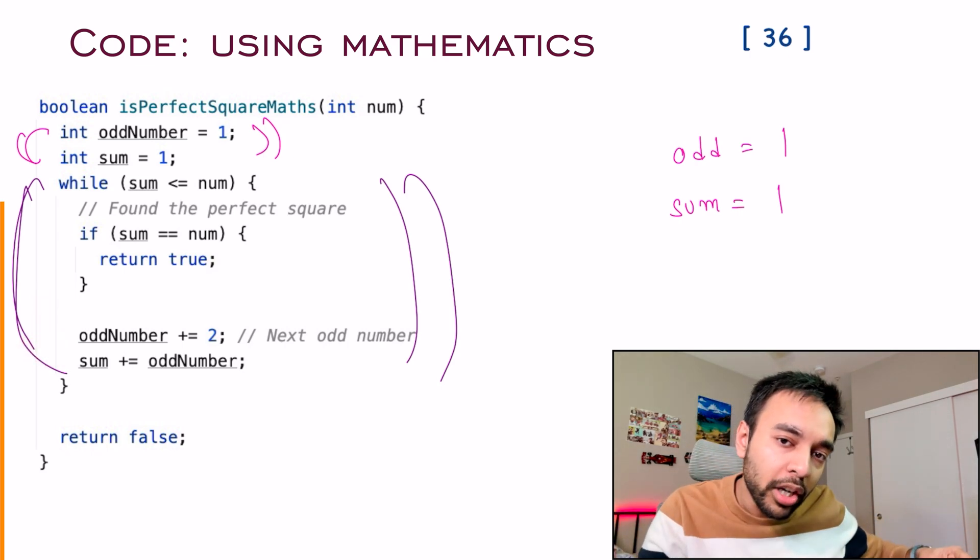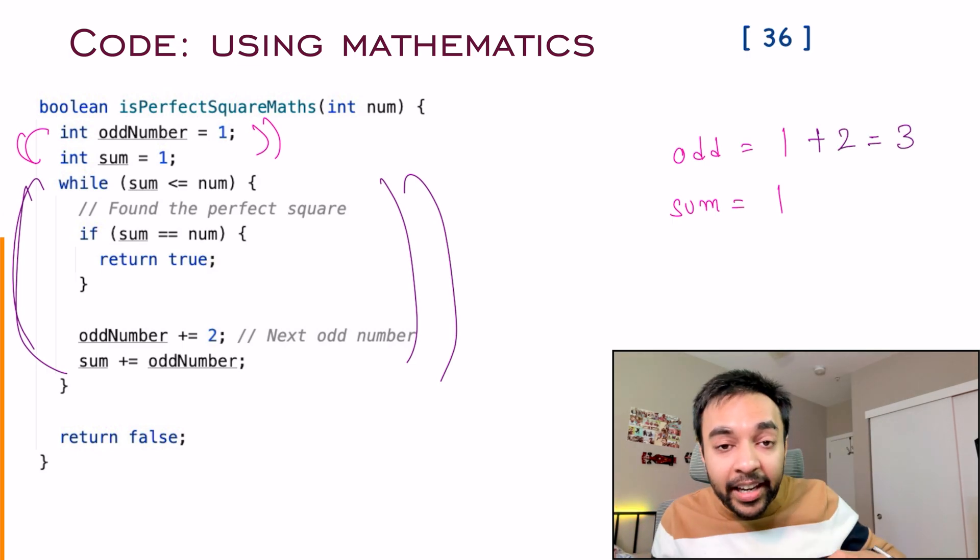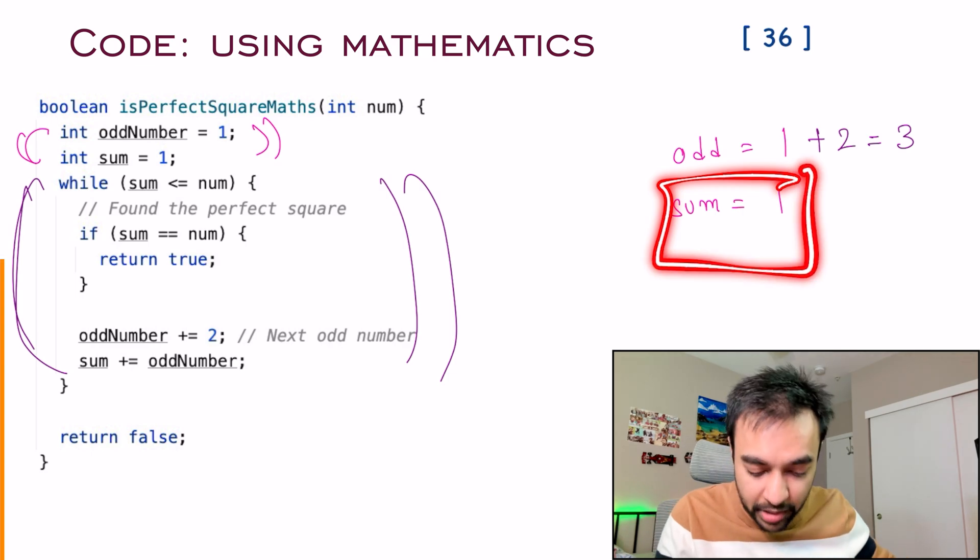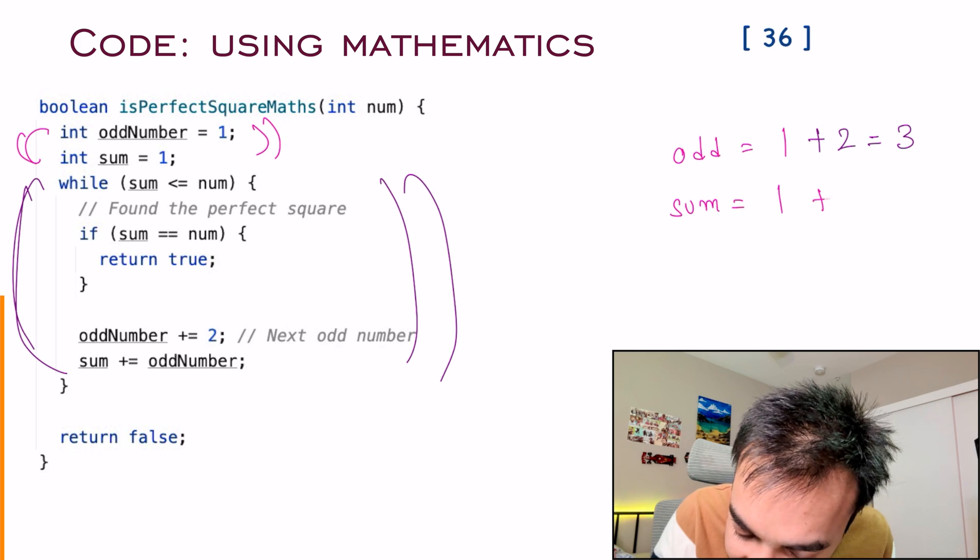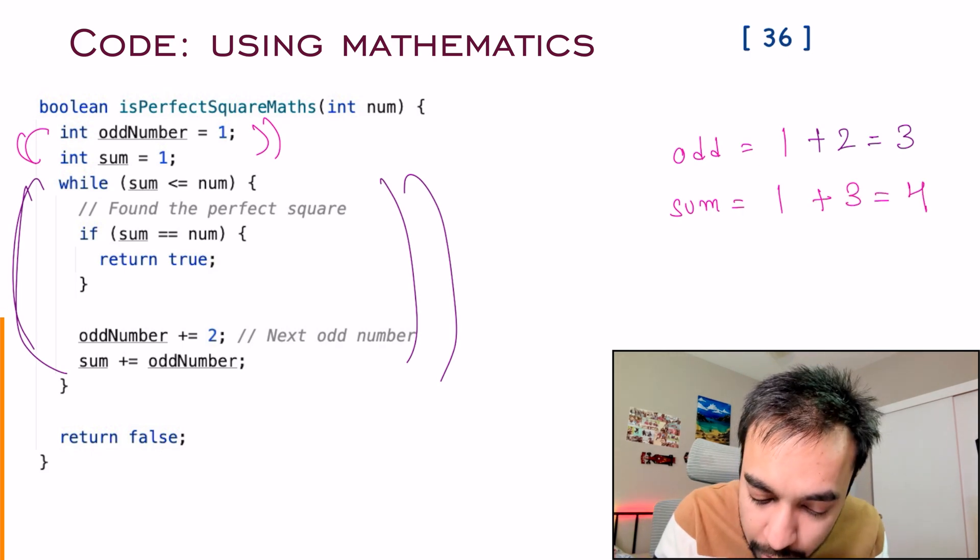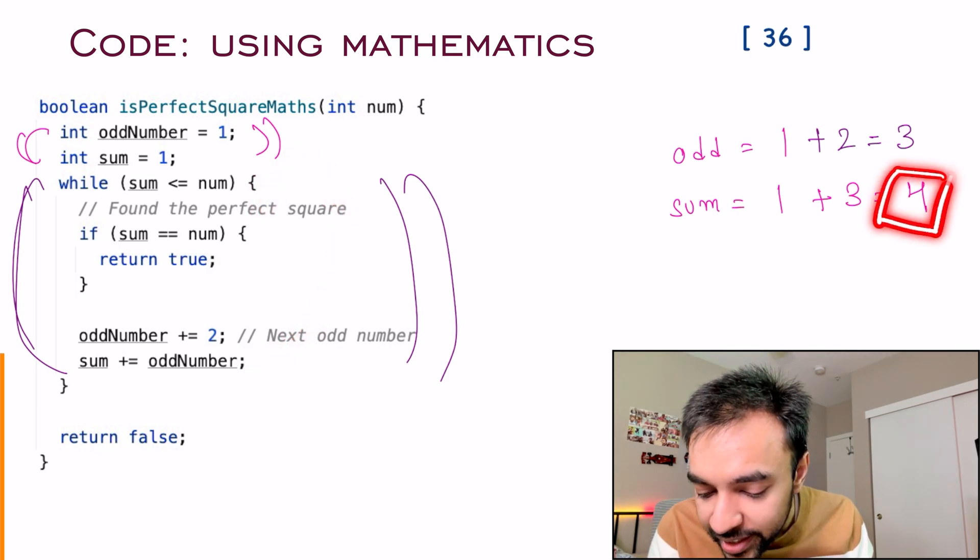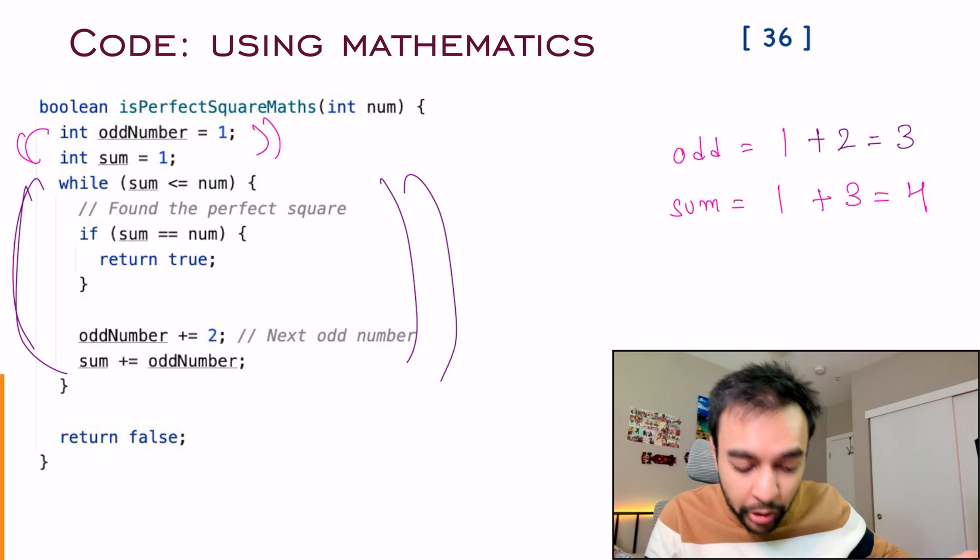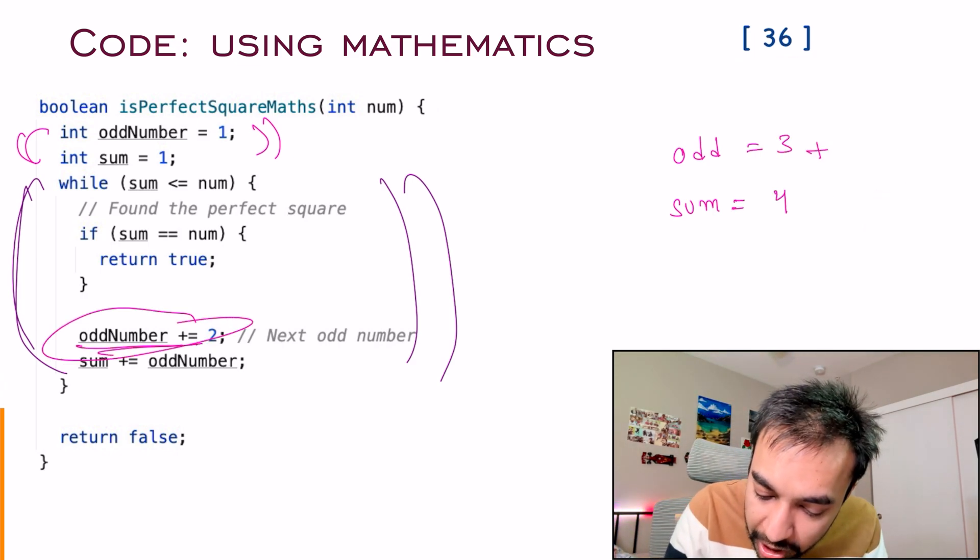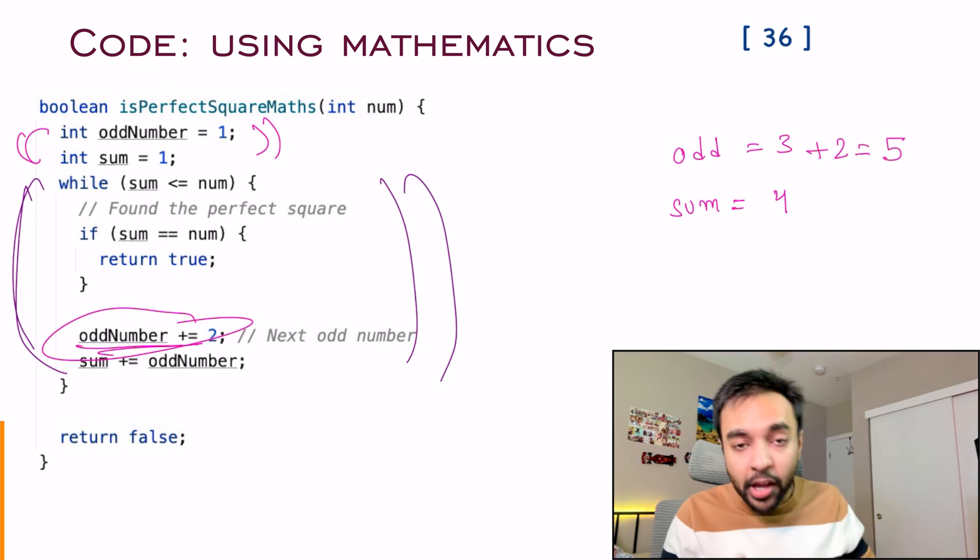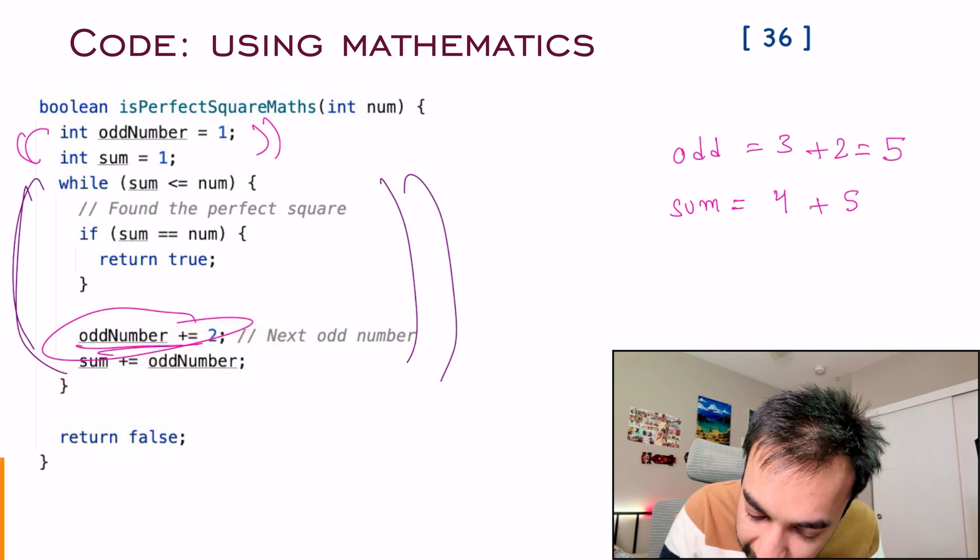On doing this, I will get sum equal to one plus three, and that equals to four. What will happen in the next iteration? This loop will run again, and I will check, is four equal to 36? No. So continue ahead. And what I'm gonna do next, I will find out the next odd number. So three plus two, and that is five. How do I find out my perfect square? I will add this odd number to the sum. So four plus five, and that is a nine. This is how this loop will continue on.